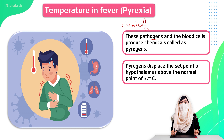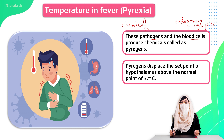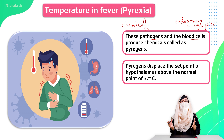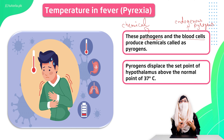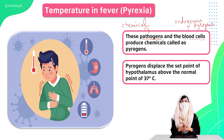White blood cells also release chemicals, and we call these endogenous pyrogens. When white blood cells and bacteria fight together, they both release chemicals. As a result of this chemical release, our body's thermostat is pushed above 37°C, and that is why our body produces a fever.